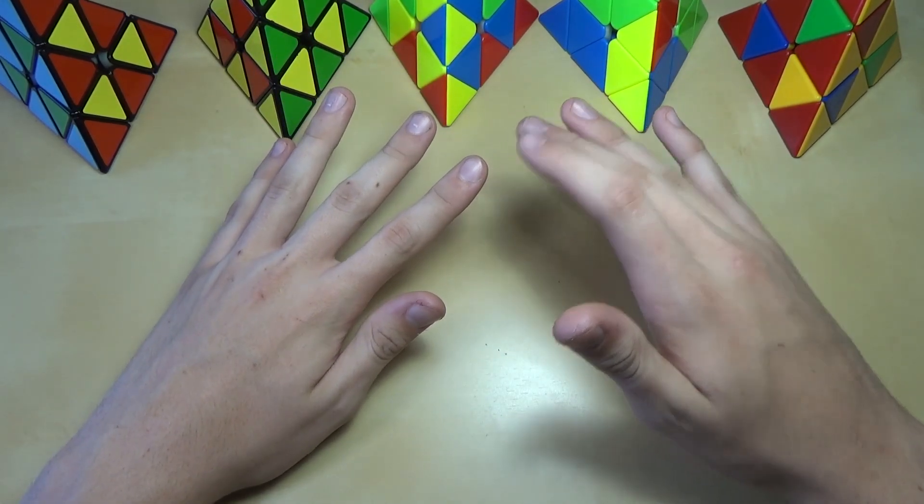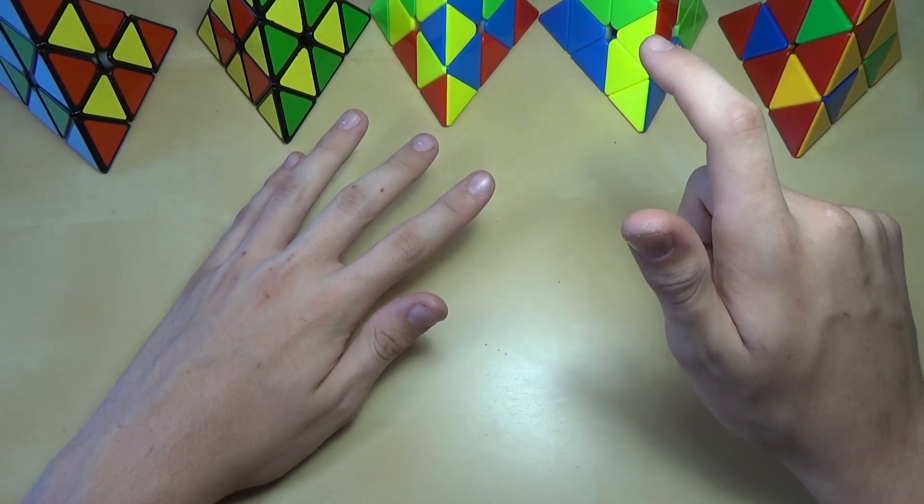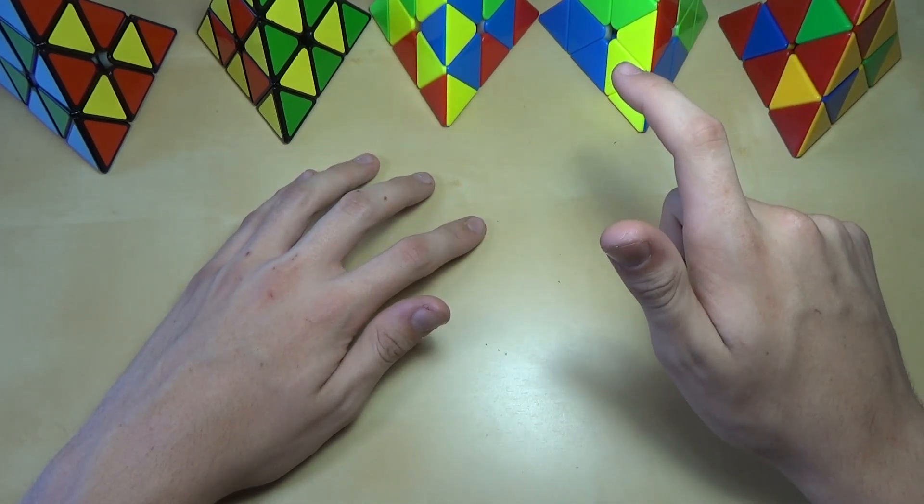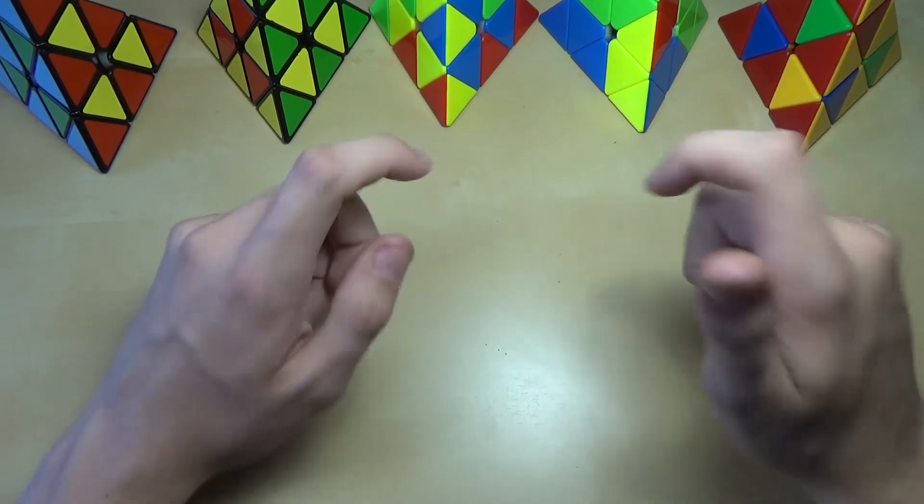If at any point during this video you want to skip to any of these patterns, there'll be a little annotation on screen. Just click on that and it'll bring you to the point in the video. Or you can look at the time codes down in the description, and I'll also have all the algorithms in the description.